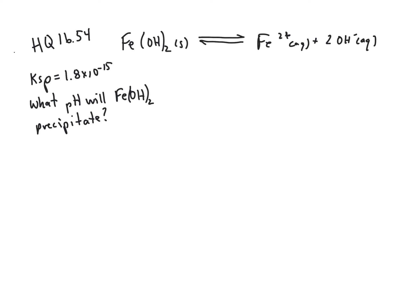So we can set up an ICE table: our initial, our change, our equilibrium concentrations. Our initial concentration, they tell us in this problem, we've got 0.57 molar Fe²⁺. We're going to have zero hydroxide.